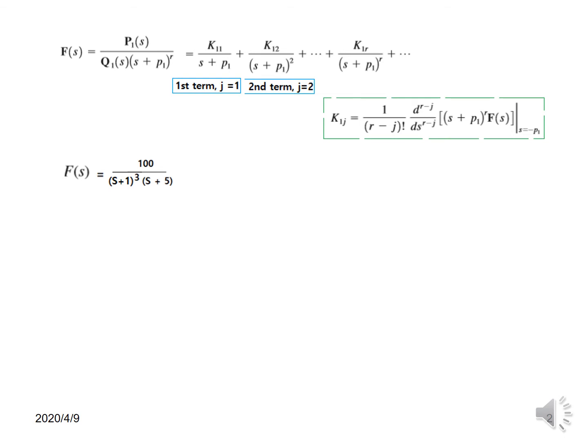With this example, we have r equal to 3. The way we write it is: first k11 with (s+1) to power 1, then k12 with (s+1) to power 2, and finally k13 with (s+1) to power 3. These three terms cover the (s+1) factor. Then for the other factor we write k2 divided by (s+5), giving us four terms total.